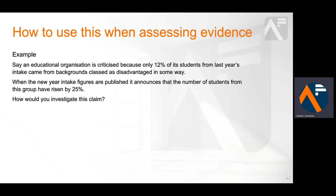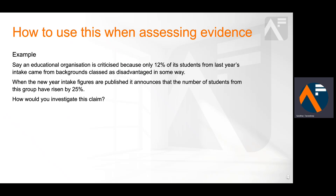Say an educational organisation is criticised because only 12% of its students from last year's intake came from backgrounds classed as disadvantaged in some way. When the new year intake figures are published, it announces that the number of students from this group have risen by 25%. How would you investigate this claim?